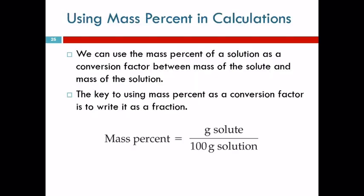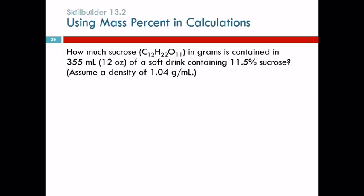Mass percent can be used as a conversion factor in calculations. It relates the mass of the solute to the mass of the solution. The key to doing this is to recognize that you can write it as a fraction. The mass percent is that many grams of solute per hundred grams. So let's do an example.